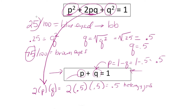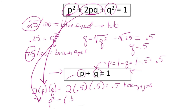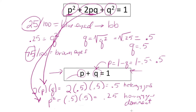We can find the homozygous dominant individuals two ways. We know 25 out of 100 were blue-eyed and 50 out of 100 are heterozygous — together that's 75, leaving 25 individuals who are homozygous dominant. We can also use p²: 0.5 times 0.5 equals 0.25, which represents the homozygous dominant individuals. Tune in for the next video for more information about Hardy-Weinberg equilibrium.